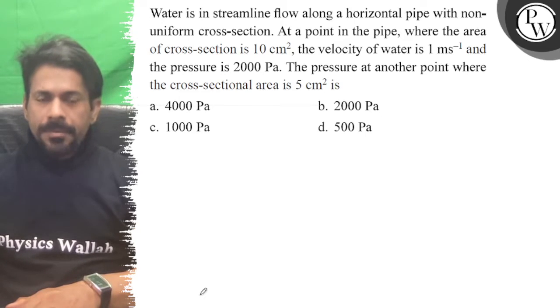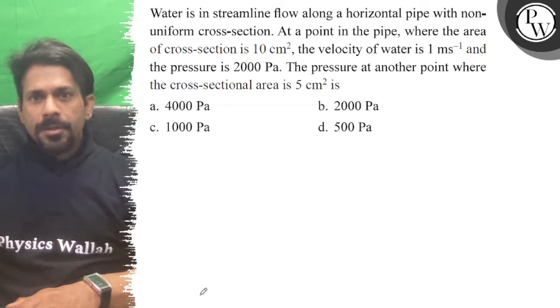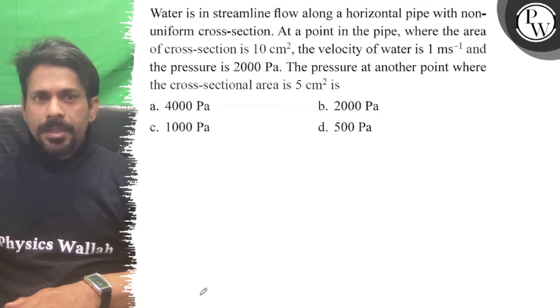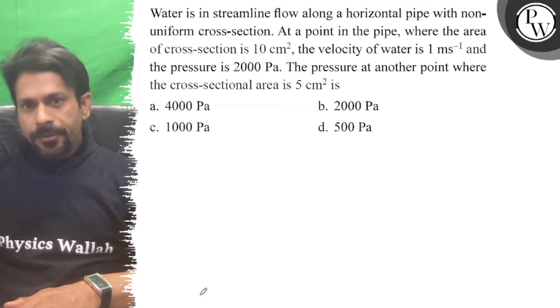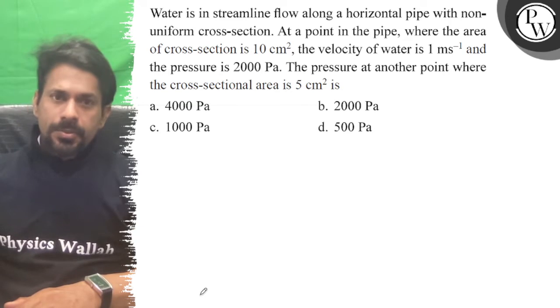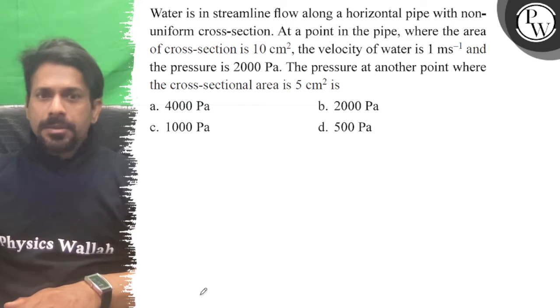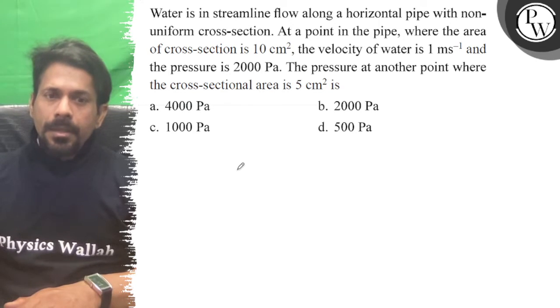Hello, let's see the question. Water is in streamlined flow along a horizontal pipe with a non-uniform cross section. At a point in the pipe where the area is 10 cm², the velocity of water is 1 m/s and the pressure is 2000 Pa. The pressure at another point where the cross sectional area is 5 cm².